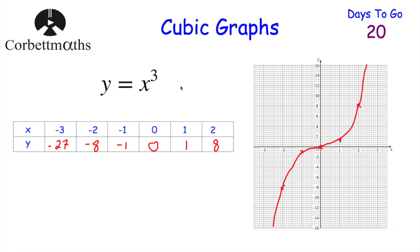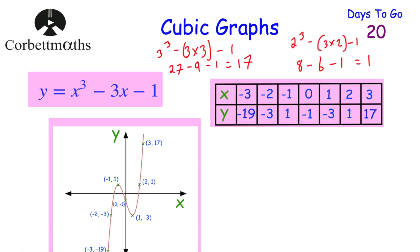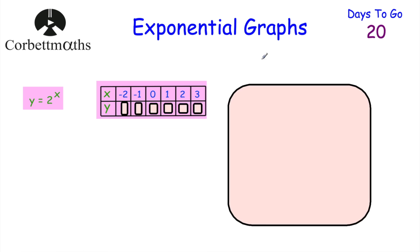Sometimes cubic graphs - when it's just x cubed - have the simple shape. But as you introduce x squareds, x's and numbers, it changes and you get two turning points: perhaps a maximum and then a minimum. If it was minus x cubed, the graph would come down first, then minimum, maximum, and so on. That's what that cubic graph looks like.